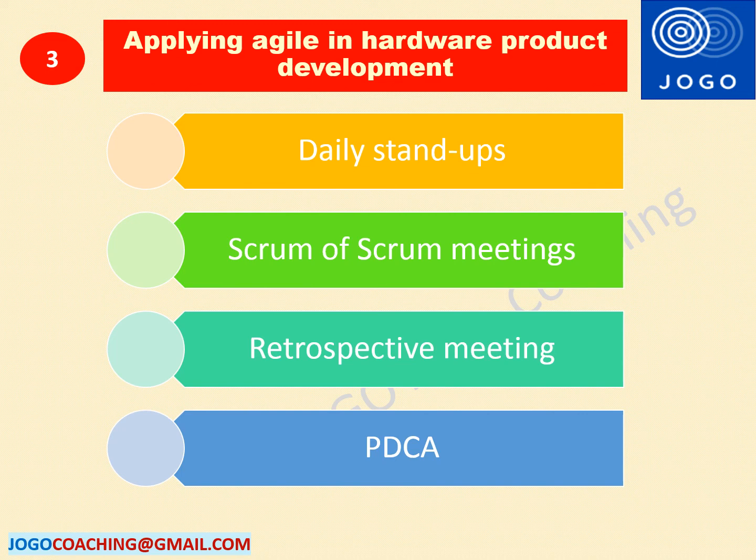As per Agile principle 12, at regular intervals the team reflects on how to become more effective, then tunes and adjusts its behavior accordingly. Hardware product development team members can do a retrospective meeting and follow the PDCA — Plan, Do, Check, Adjust — process to focus on continuous improvement in their hardware product development.